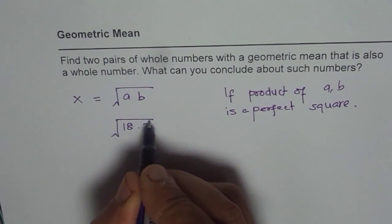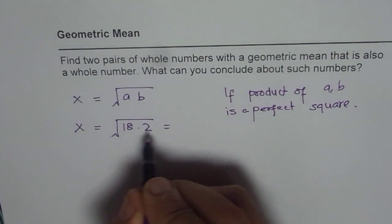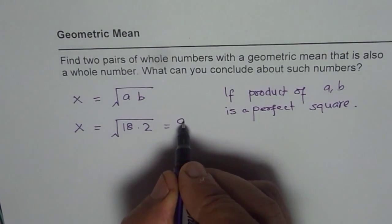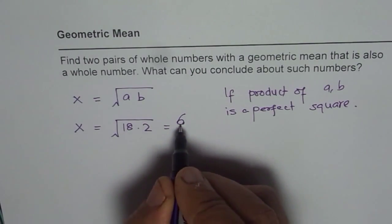18 times 2 is 36. So the result will be that the geometric mean in this case will be 6. 18 times 2 is 36, square root of 36 is 6. So that could be one set of numbers.